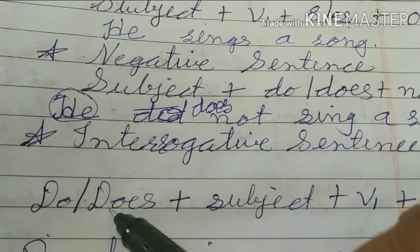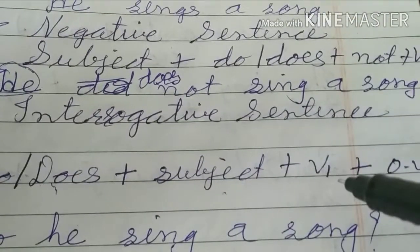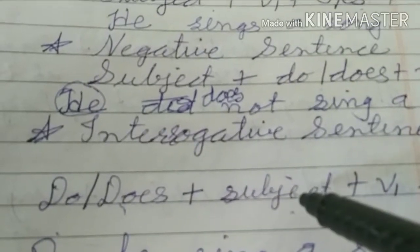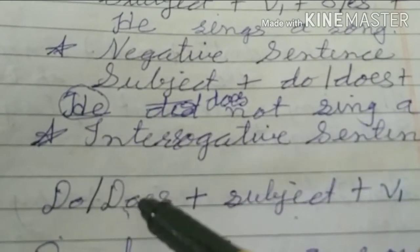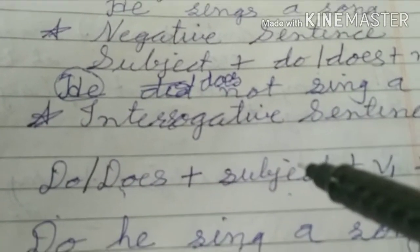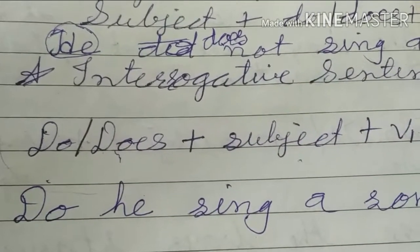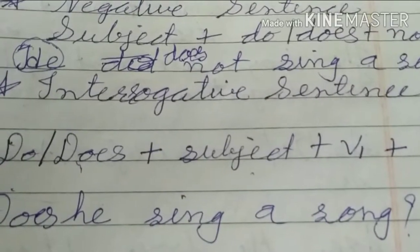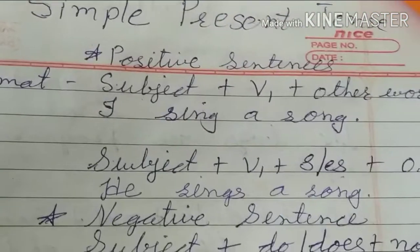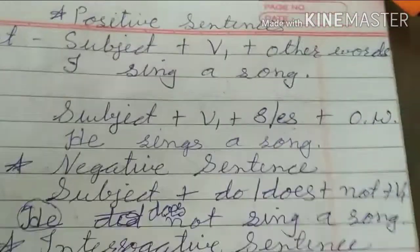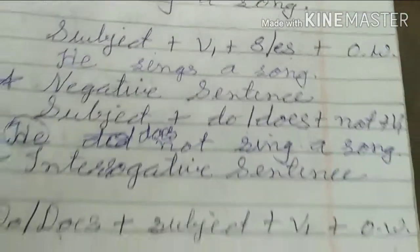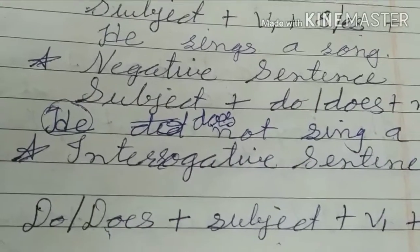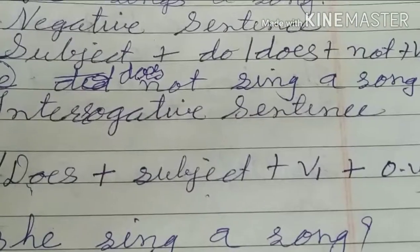For interrogative sentences, the helping verb 'do' or 'does' is placed at the beginning, followed by Subject + V1 + other words. The same rule applies: 'do' for first, second, and third person plural; 'does' for third person singular. So writing 'Do he sing a song?' is wrong - correct is 'Does he sing a song?' with a question mark. Summary of formats: Positive: Subject + V1 (+s/es for 3rd person singular) + other words; Negative: Subject + do/does + not + V1 + other words; Interrogative: Do/Does + Subject + V1 + other words.